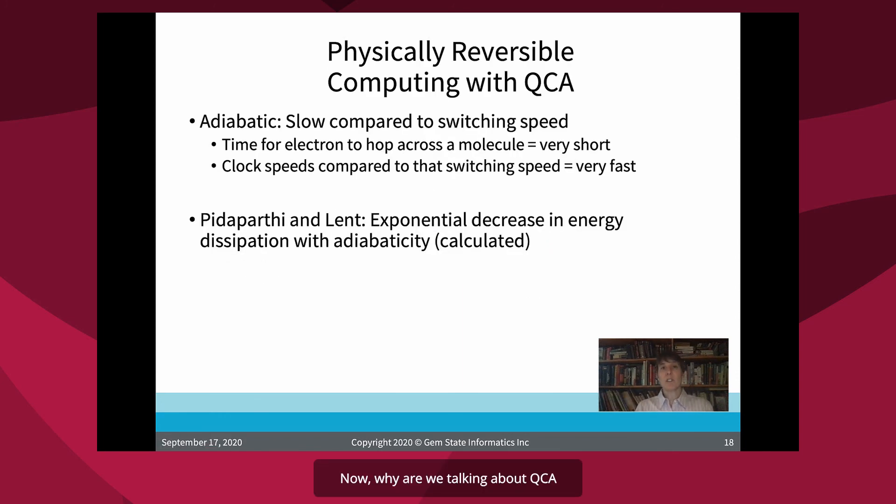Now, why are we talking about QCA in a reversibility conference? Now, one thing that's nice is it's using charge configuration rather than charge flow. So you're not dumping electrons off to ground or anywhere else or heating up your environment. Also it's important to keep in mind that adiabatic is slow. It needs to be for adiabatic computing needs to be slow compared to your switching speed. When you're talking about the switching speed in QCA is the time it takes for an electron to hop across a molecule. That's very, very short. So your clock can be very, very fast while still being adiabatic. That's really exciting.